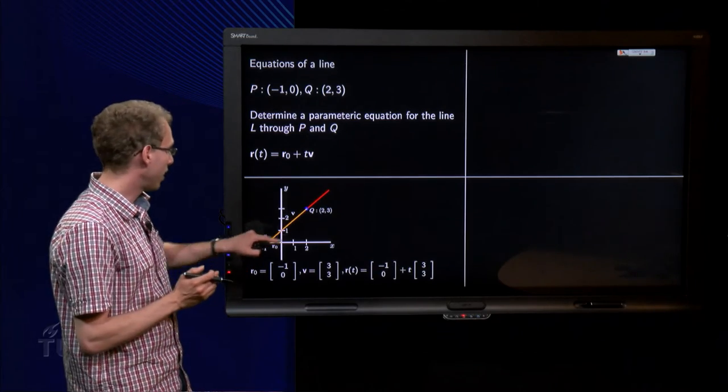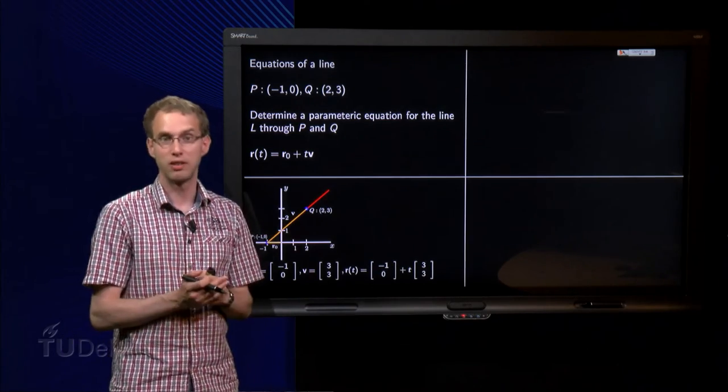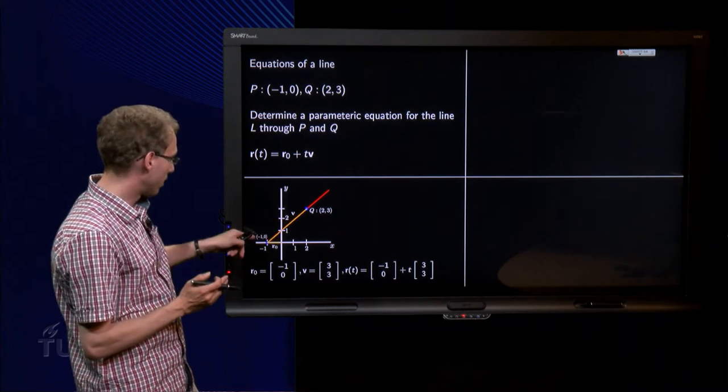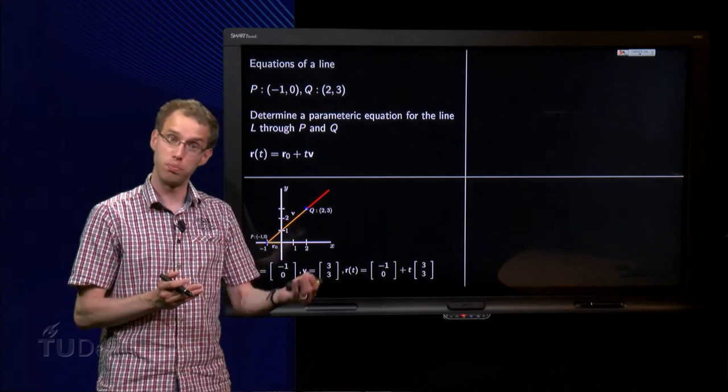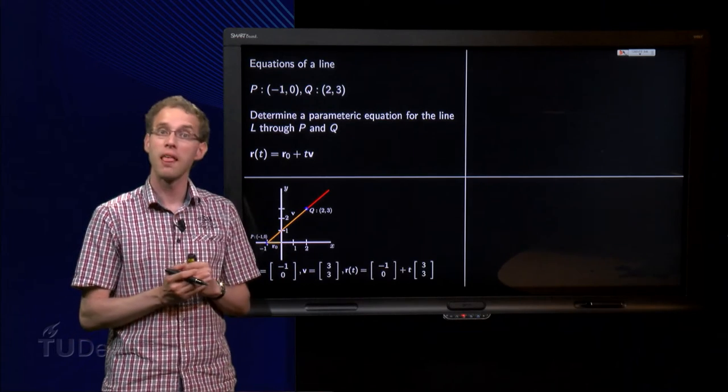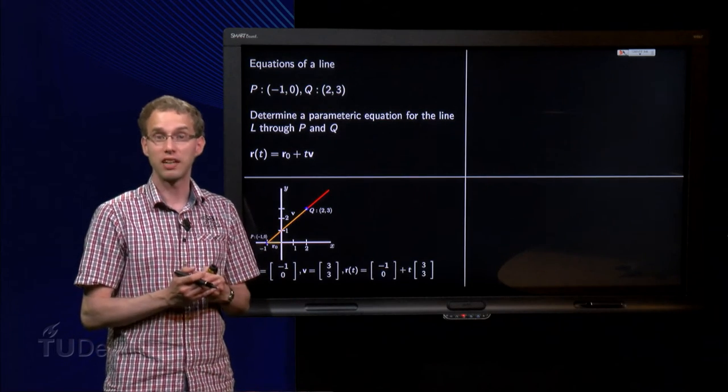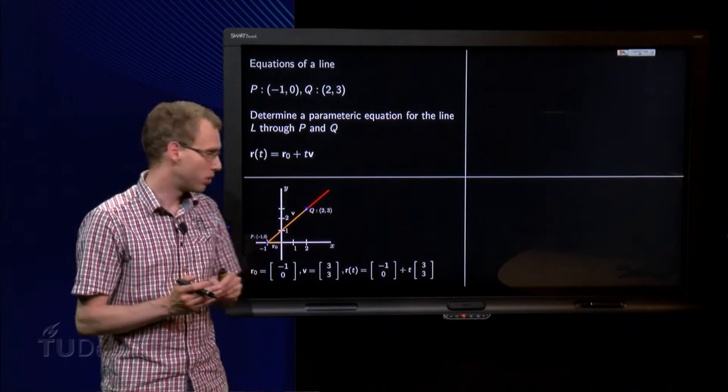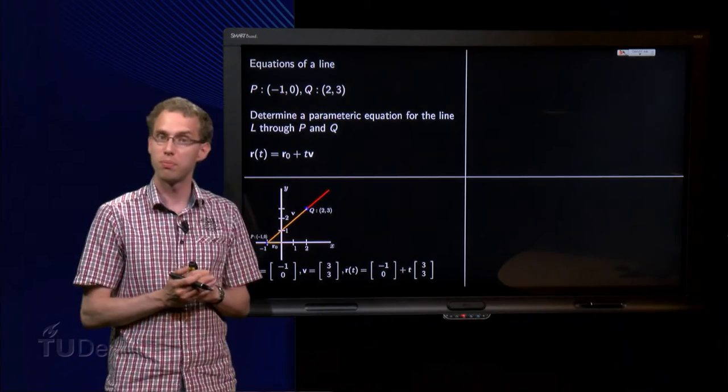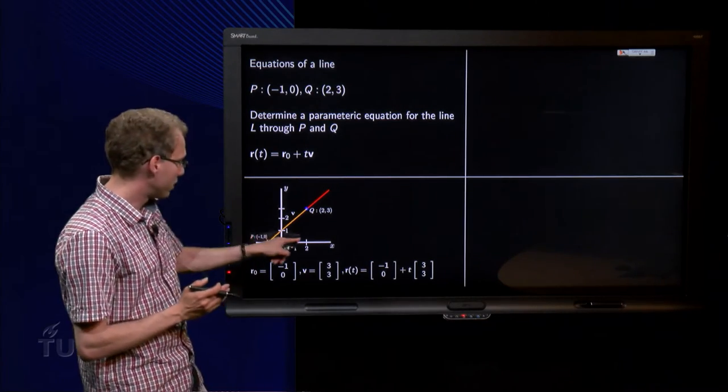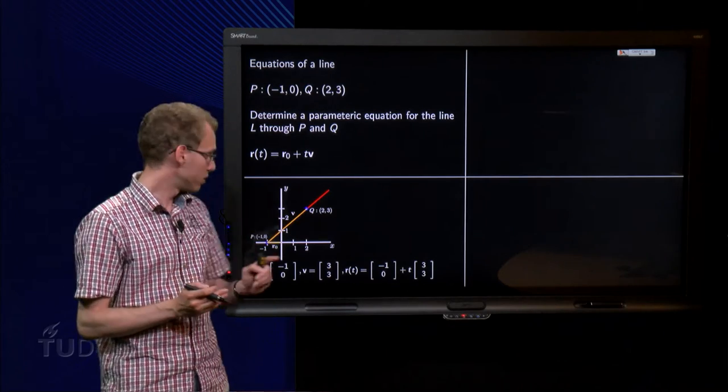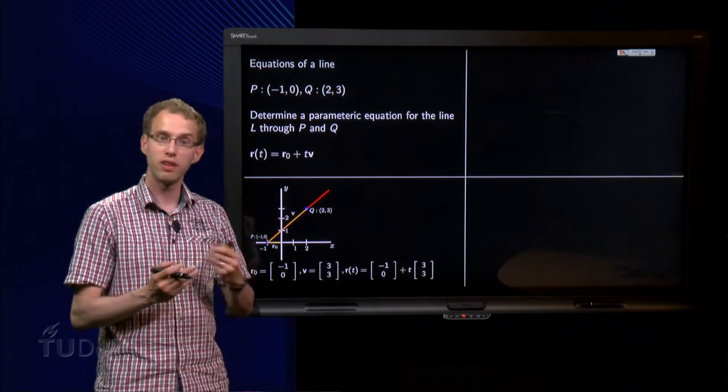And for r0 we can take any vector from the origin to the line. Well, we chose to take a vector from the origin to p, so minus 1, 0. And v is a vector which is in the direction of the line. So we took this one, going from p to q. If we want from p to q, we have to go three steps in the x direction and three steps in the y direction. So v is the vector 3, 3.